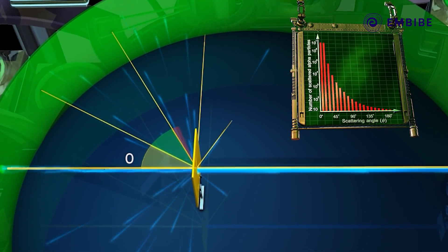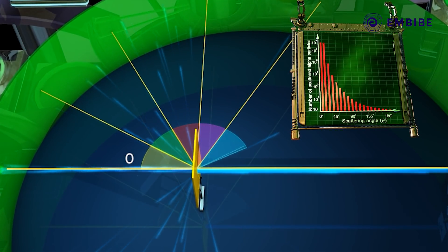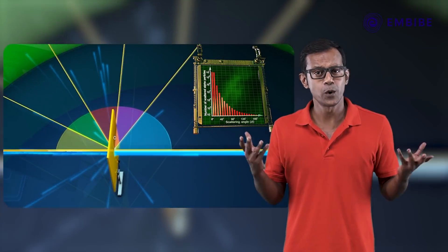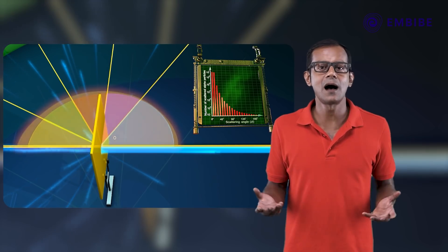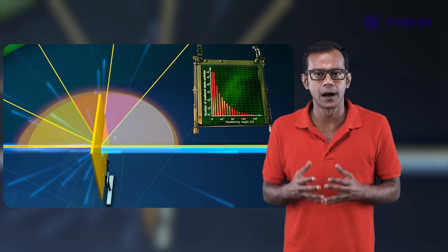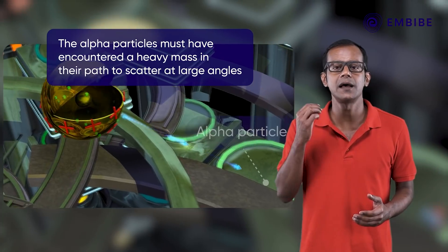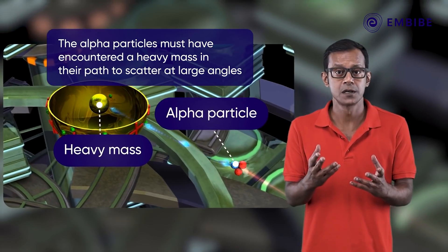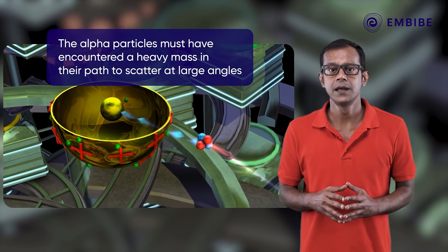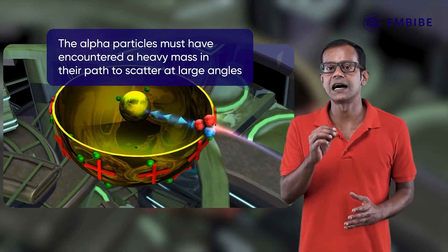Scientists questioned how this large angle scattering could occur. The alpha particles must have encountered a heavy mass, almost the mass of an atom, in their path to scatter at large angles.